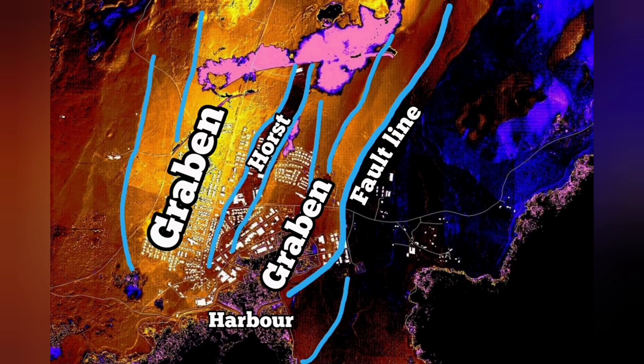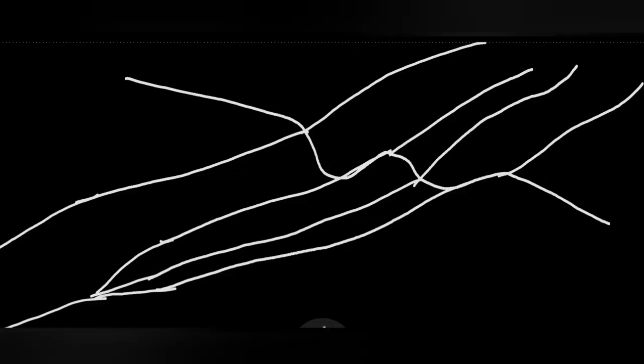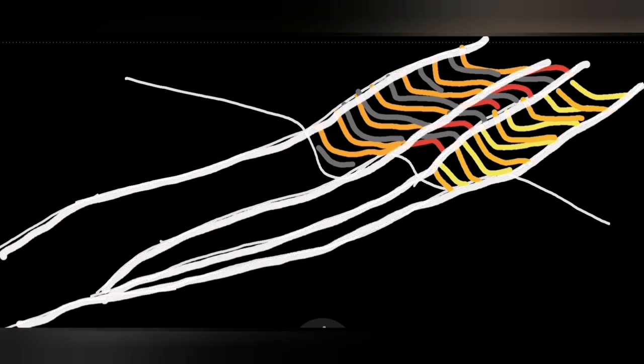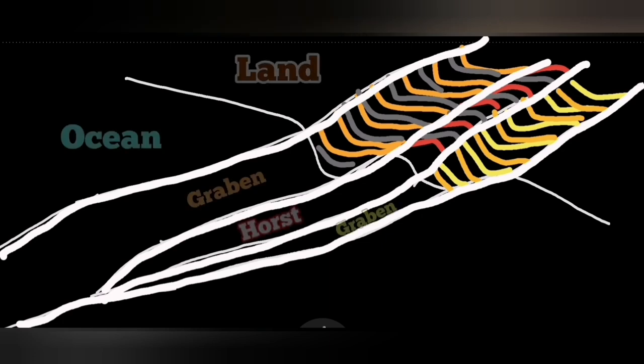Off the shore of Grindavik, in the harbor and toward the ocean, we have the continuation of this horst and graben. This is practically a rift, a rift valley.